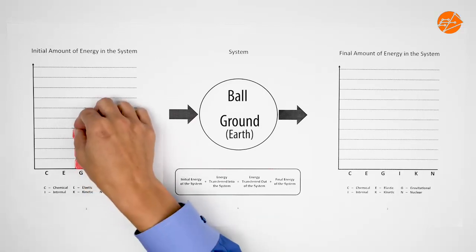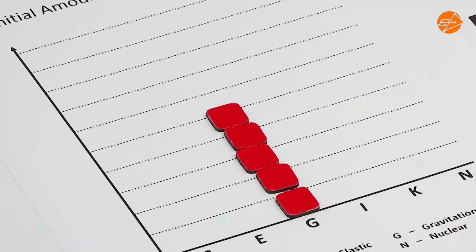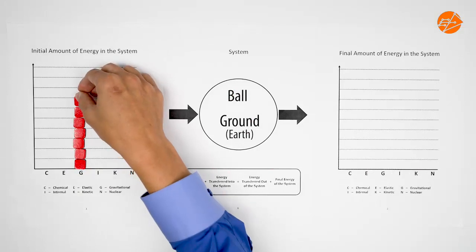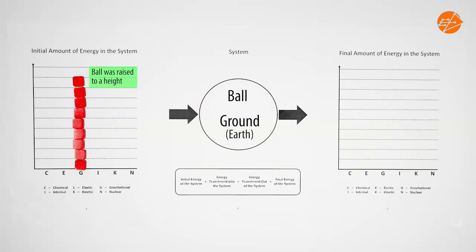In the initial state, you can see these chips stacked up in the column for energy in the gravitational potential store. There is no fixed rule for how many chips to use because it depends on which position we use as a reference level where gravitational store energy is zero. For this example, we use ground level as the reference level and assign 9 chips to represent the energy in the gravitational potential store. Notice there are no chips in the column for kinetic store energy because the ball was initially at rest.